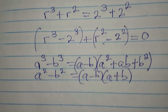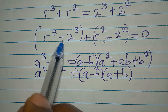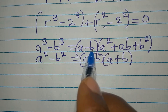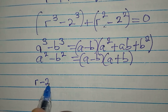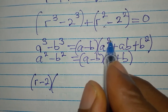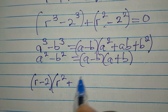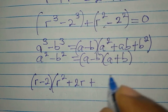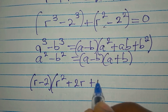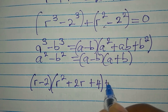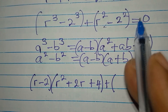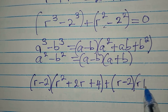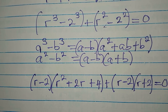So for the difference of two cubes part, a minus b becomes r minus 2, into a squared which is r squared, plus ab which is 2r, plus b squared which is 4. Then for the difference of two squares part we get r minus 2 into r plus 2. Everything is equal to zero.